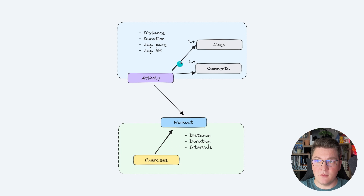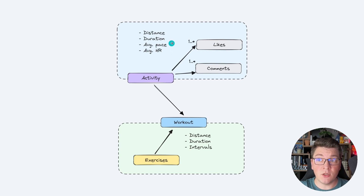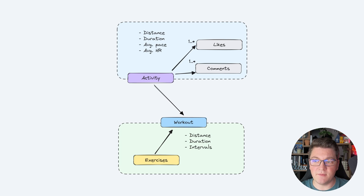Inside the aggregate itself, you can have one or more entities — like likes and comments for a particular activity — and a bunch of supporting value objects to express the aggregate's design. For example, in the workout aggregate, exercises are an entity, and we also have value objects like distance, duration, and interval.